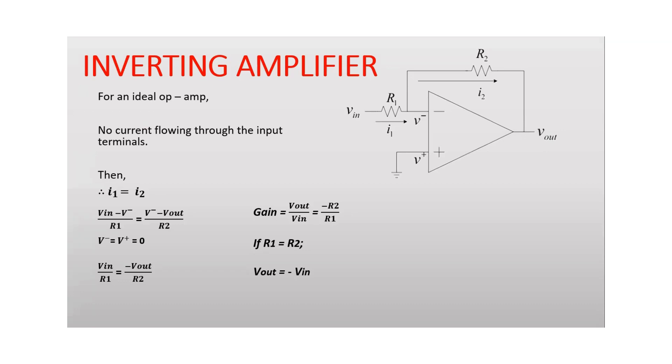Then this I1 current can be written as Vin minus V minus terminal voltage over R1. Then also we can say that I2 is the voltage at V minus terminal minus Vout over R2, that is shown in this equation.